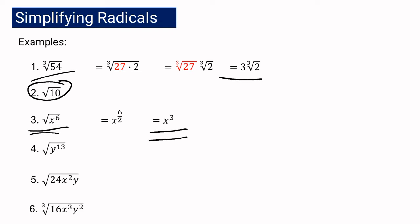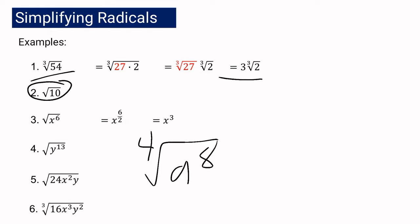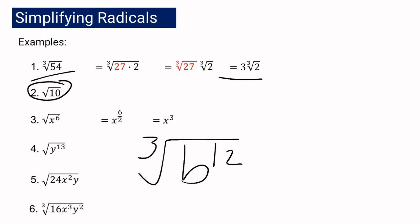To simplify radicands with an exponent, we are just going to divide our exponent by our index. For example, the 4th root of a to the 8th: you divide 8 by 4, so the answer is a squared. And if we have the cube root of b to the 12th, you divide 12 by 3, so its simplest form is b raised to the 4th.